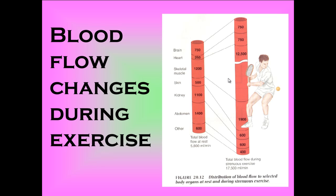The skeletal muscles increase massively — in the order of six to seven times. The skin also increases the amount of blood that flows to it. The reason for that is you can cool down by sending blood to the surface of the skin, which enables more of the heat to radiate, convect, and conduct away from you.